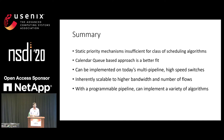Question from Danny Chen, Princeton University: In the paper you used 32 queues for evaluation, but in today's networking switches you often only get five or seven different priorities per port. What would be the impact if you only have five or seven queues?